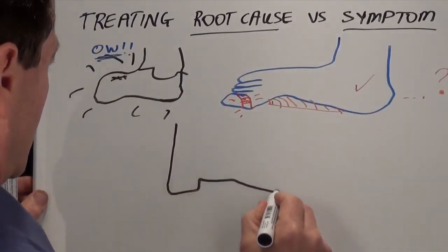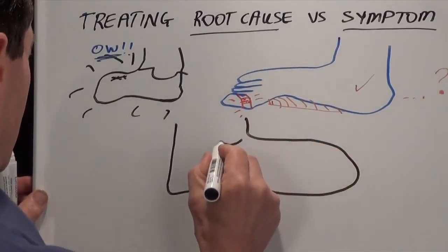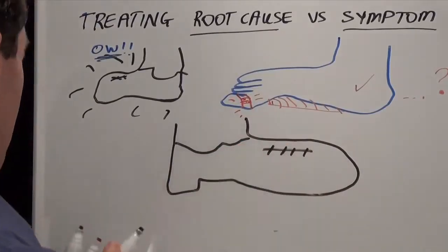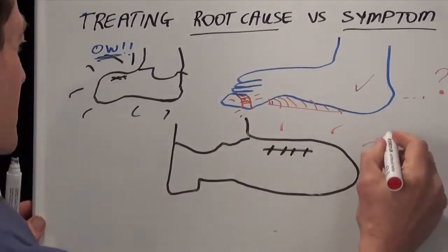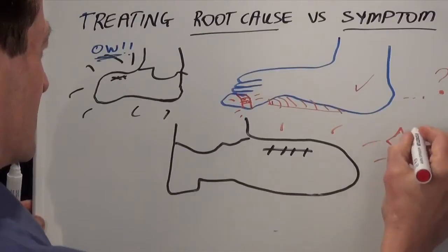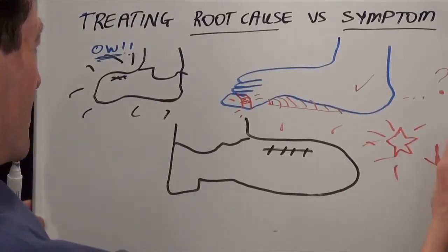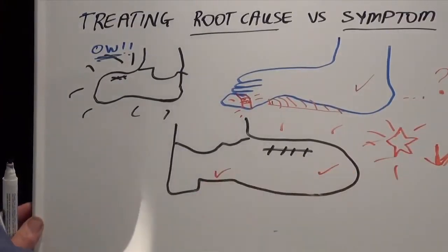If instead you focus on the shoe as the basic source of the problem, and change it for one that fits and supports from the beginning, you don't need patch over remedies for each symptom. You get an overall better solution from the start. And so it is with mild autism therapy.